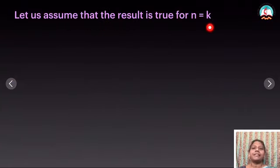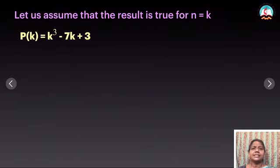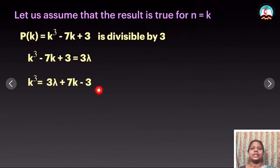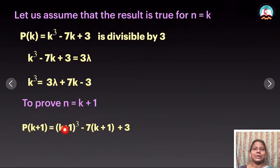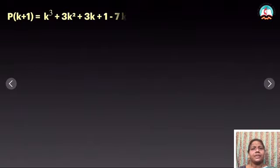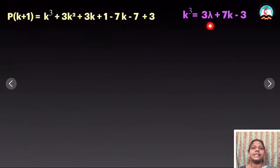Now I have to assume. Let us assume the result is true for n equal to k — that means P(k): substitute n=k, which is divisible by 3. Since it is divisible by 3, it gives only a multiple of 3. Therefore I take k³ - 7k + 3 equal to 3λ. From this, I get k³ equal to 3λ + 7k - 3, pushing the other terms to the RHS.